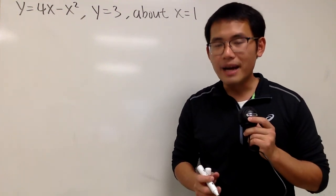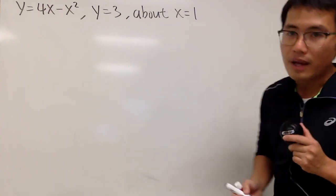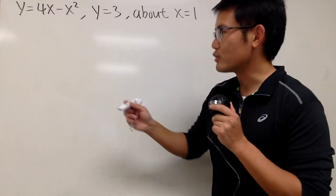Okay, we're going to find the volume generated by taking the region bounded by this and that, and rotate it about x equals 1. So, here we go. Let's have a picture first.